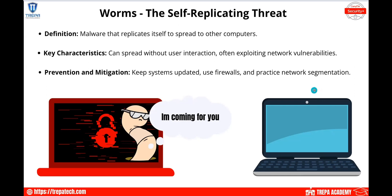Worms are self-replicating malware that spread to other computers. The key thing about a worm is that it can spread without user interaction, often exploiting network vulnerabilities. A worm may infect your system through something like the SMB protocol — ports 445 and 139 — file sharing protocols that are highly vulnerable. It can then self-propagate throughout your network. To prevent this: keep systems updated, apply proper patches, harden your devices, use good network segmentation, host-based firewalls, and east-west filtering to block exploitable ports and protocols.